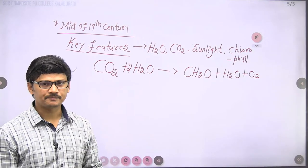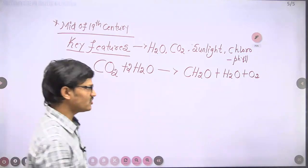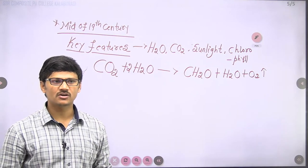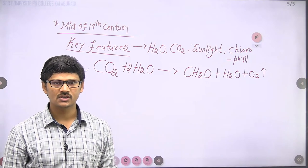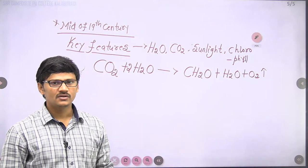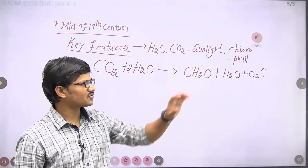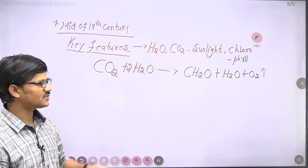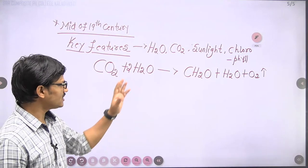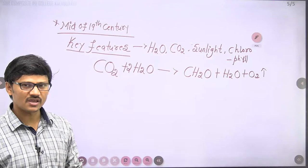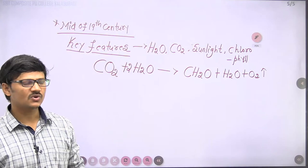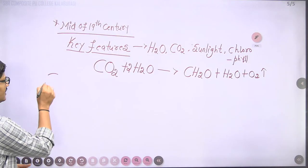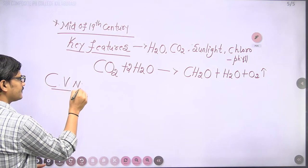A confusion arose: during photosynthesis, oxygen is released — but from where does this oxygen come? Does it come from water or from carbon dioxide? Both molecules contain oxygen. This remained an unsolved question for many years, until it was successfully explained by scientist Cornelius van Niel, who was a microbiologist.